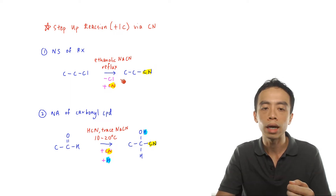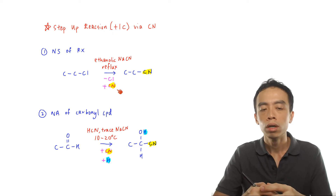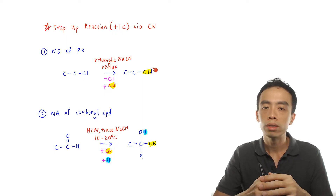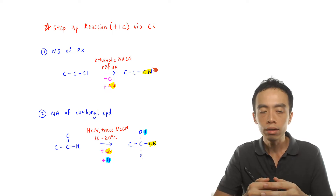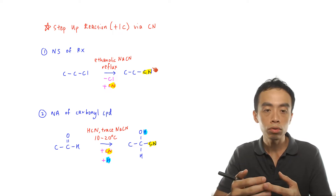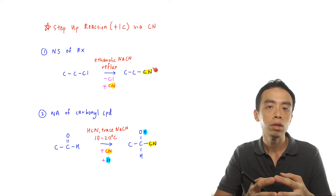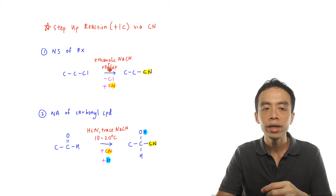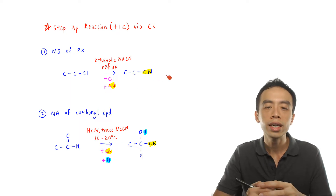So basically the conversion is: I remove the Cl, and I introduce the nitrile group. I convert this Cl to a CN group — because this is a replacement reaction, this is a substitution reaction. And if I want to go through substitution, what I will have to do is I will have to convert whatever starting compound I have to a haloalkane, then I do a nucleophilic substitution of haloalkane to introduce this nitrile.